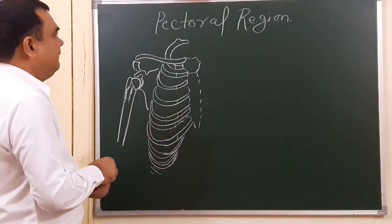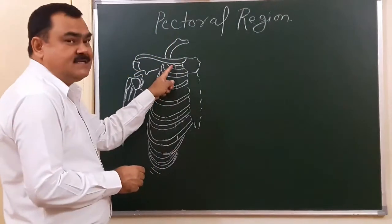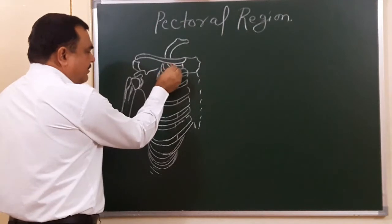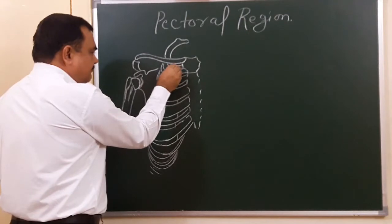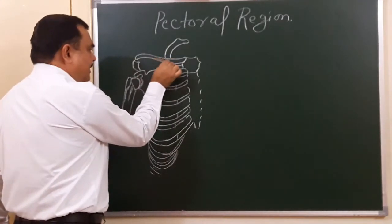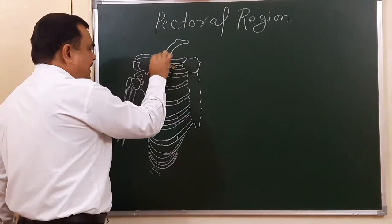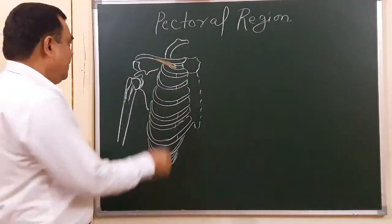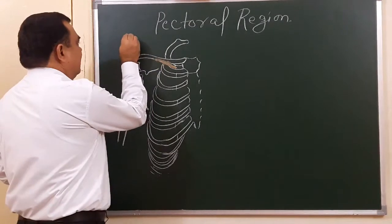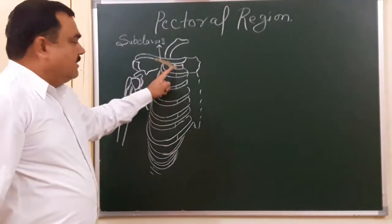In the pectoral region, there are basically three muscles. The first is the subclavius — meaning below the clavicle. The subclavius muscle takes origin from the first rib and costal cartilage of the first rib, and it inserts on the inferior side of the middle one-third of the clavicle, specifically into the subclavian groove of the clavicle.